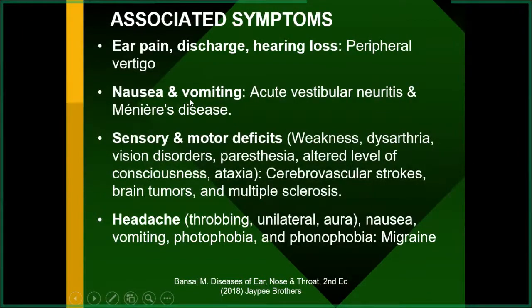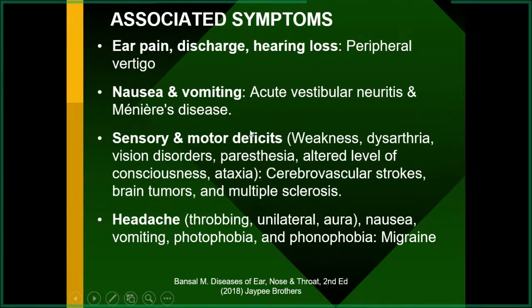Associated symptoms: ear pain, discharge, and hearing loss have already been discussed. Nausea and vomiting usually occur in Meniere's disease and acute vestibular neuritis; patients with BPPV usually do not have nausea and vomiting. Any sensory or motor deficit — weakness, dysarthria, vision disorders, paresthesias, altered consciousness, or ataxia — indicates cerebrovascular strokes, multiple sclerosis, or brain tumors. Migraine headache is throbbing, usually unilateral, sometimes with aura, photophobia, and phonophobia.